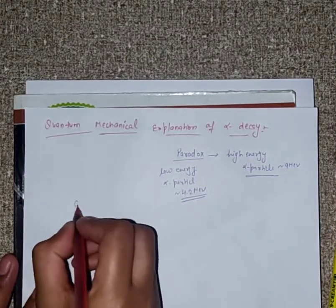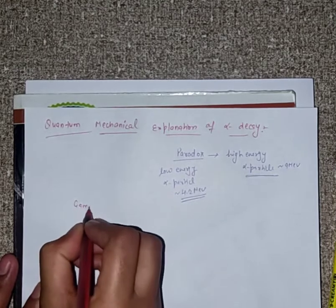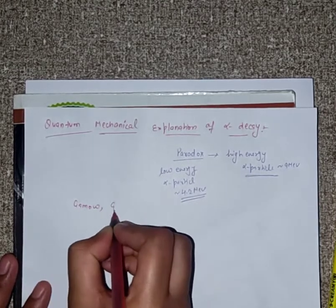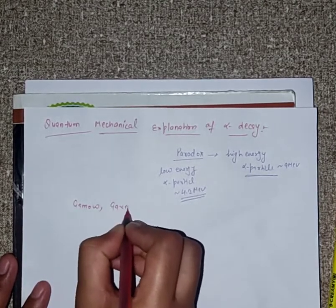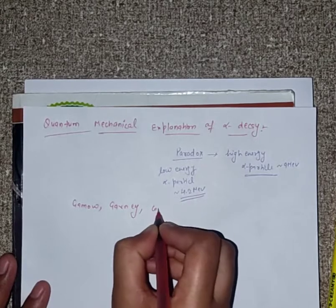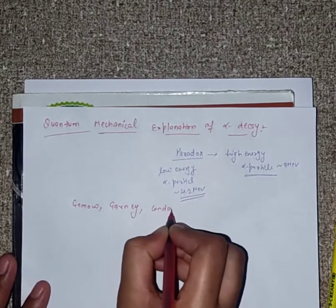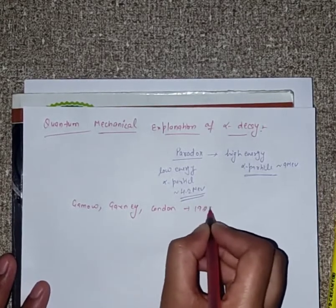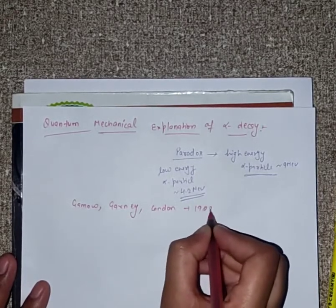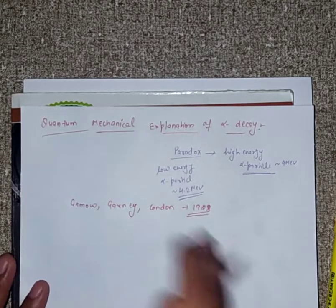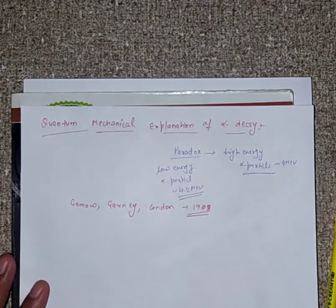This paradox was explained by three scientists: number one was Gamow, number two was Gurney, and number three was Condon, in 1928. The paradox problem was resolved in 1928.